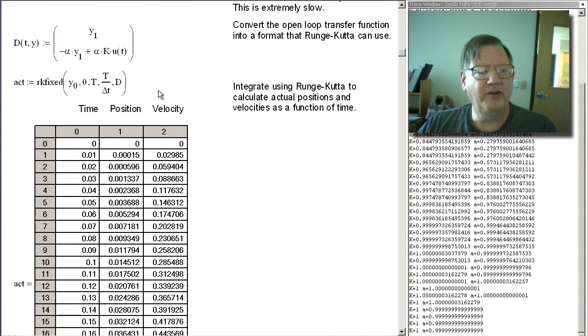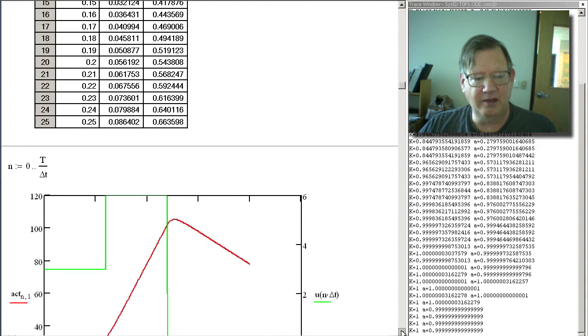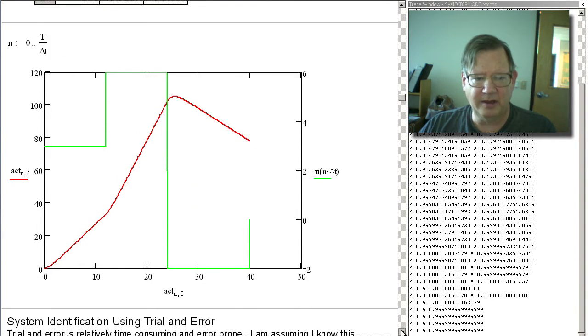So I'm going to use a differential equation to calculate the position and the velocity. y0 is the position and y1 is the velocity. And what I'm doing here is I'm integrating the velocity to get position and I'm integrating the acceleration to get velocity. Then I'm using Runge-Kutta to calculate positions and velocities as a function of time. And the results look like this.